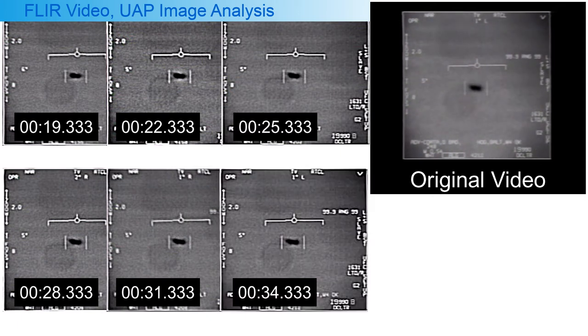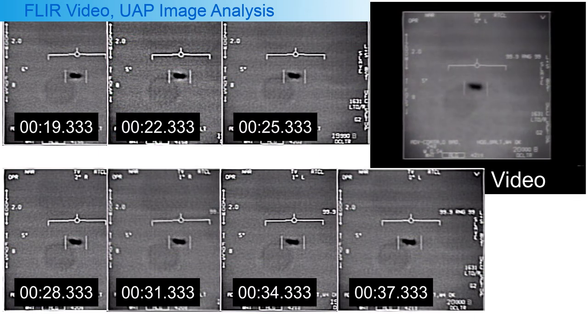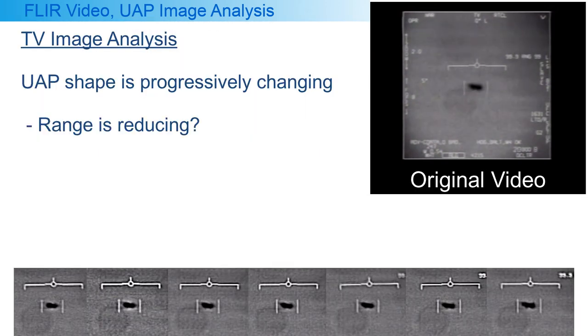It seems to me that the shape is slightly changing as the video progresses. I think this could be either because the range to the UAP is reducing, and we're starting to see a little more of the object towards the end of the section.